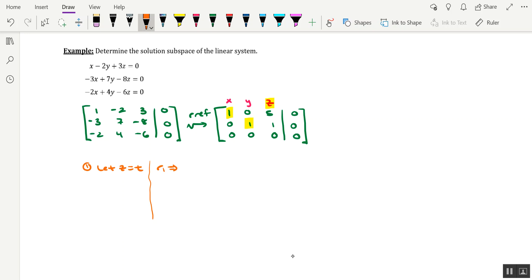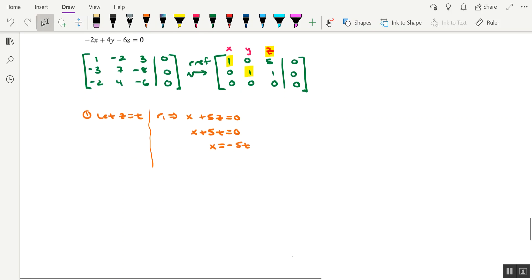The first row tells us that x plus 5z equals 0. Since z is getting replaced by t, that's x plus 5t equals 0. In other words, x equals negative 5t. Row 2 would tell us that y plus z equals 0, so that's y plus t. And solving for y, y equals negative t.